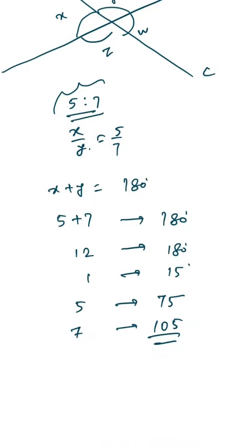Now x is 75 degrees and y is 105 degrees. Since they are in ratio of 5 is to 7, this will be the final value of the angles.